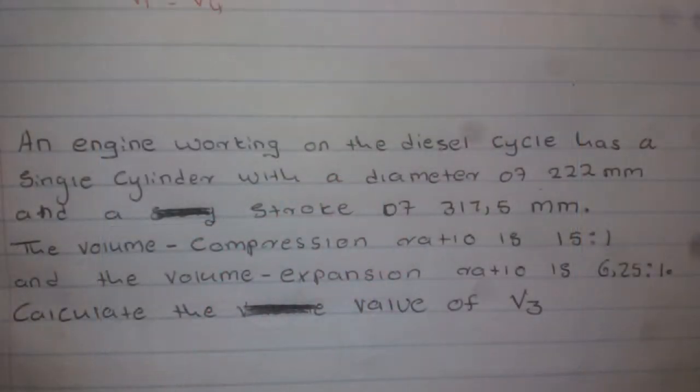An engine working on the diesel cycle has a single cylinder with a diameter of 225 millimeters and a stroke of 317.5 millimeters. The volume compression ratio is 15:1 and the volume expansion ratio is 6.25:1. The question asks: calculate the value of V3.